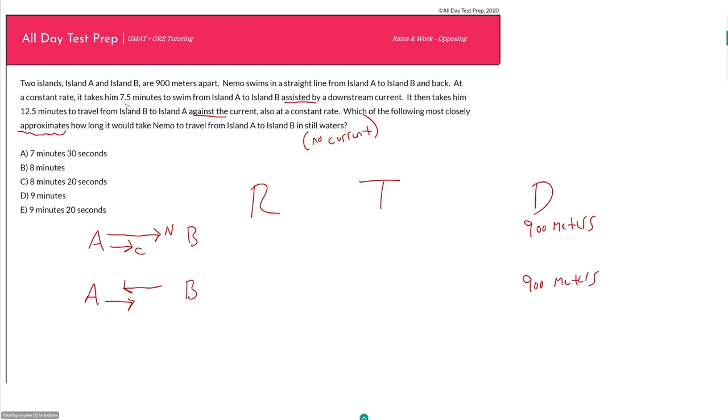We know the times for each leg of the trip. I prefer writing them as fractions, so seven and a half is 15 over 2. It looks like our unit here is meters per minute, which you want to take note of—sometimes you might have to convert between meters per minute or meters per second and kilometers per hour.